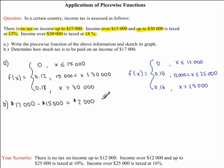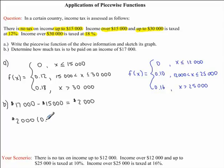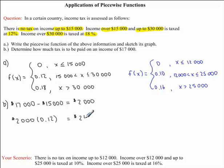Now, to determine how much tax is paid on this amount, we take $2,000 — which is $17,000 minus $15,000 — and multiply it by our percentage as a decimal, which is 0.12. So $2,000 times 0.12 gives us $240.